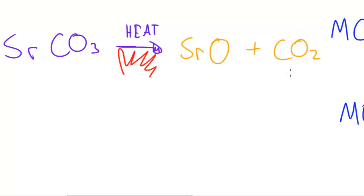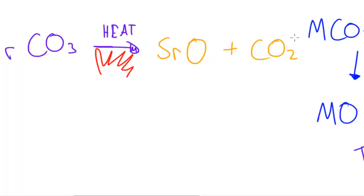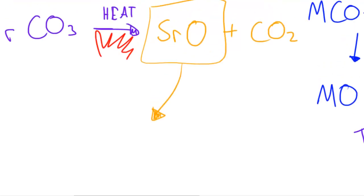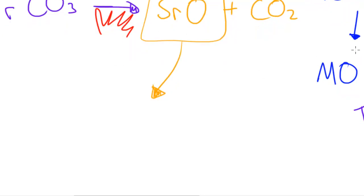This is the reaction of SrCO3 with heat to form SrO and CO2. If we now take this oxide, like I showed you in the last video, if we take this oxide which has been formed and add it to water, what happens is it forms that alkaline substance, the alkaline solution.